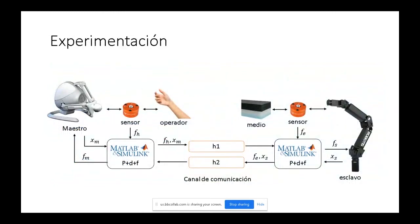Para dar una idea de cómo se implementó el sistema en la práctica: se tiene un sistema maestro con un sensor acoplado, y lo mismo se hace con el dispositivo esclavo. Todo el control se realiza desde MATLAB Simulink tanto en el sitio local como en el sitio remoto, y se transmite la información a través de internet. En los ensayos se suele agregar retardo de tiempo para asegurar que el sistema sea robusto ante cualquier eventualidad de la comunicación.